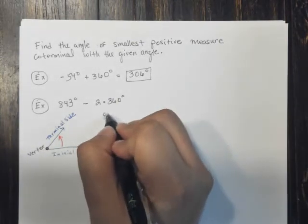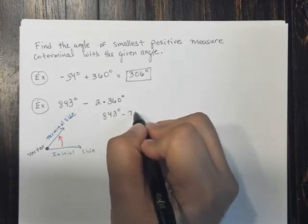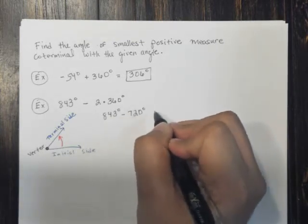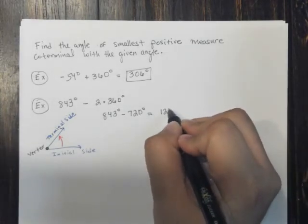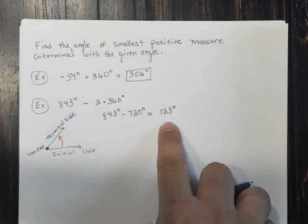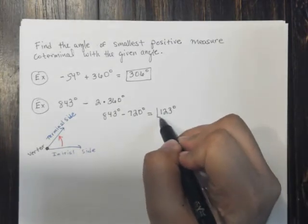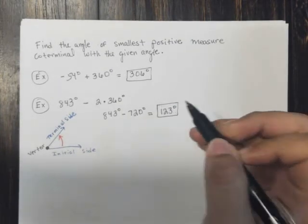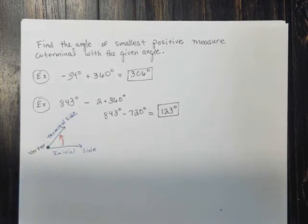That's going to give me 843 degrees minus 720 degrees, which is going to leave me with 123 degrees. Now notice, I can't subtract 360 anymore without getting a negative number. So this is the smallest positive coterminal angle with 843 degrees.